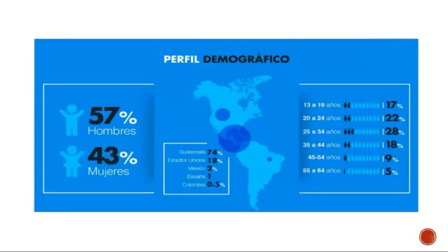Esto va a funcionar siempre y cuando tengamos el presupuesto para poder pautar aquí. Lo que al final se viene haciendo es lo que se conoce como una mezcla, porque uno va a tener a disposición una variedad de medios. Estos medios uno los tiene que evaluar en función de alcance, de si se adapta a nuestra estrategia, del contenido que publican, etcétera. En base a esos criterios uno va haciendo una mezcla para hacer lo más eficiente posible el presupuesto que va a invertir en comunicación.